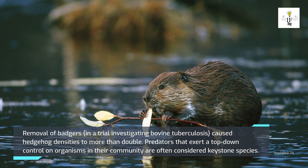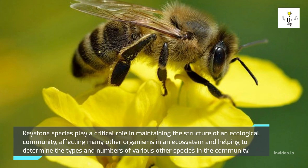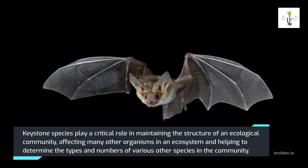A keystone species is a species which has a disproportionately large effect on its natural environment relative to its abundance — a concept introduced in 1969 by the zoologist Robert T. Payne. Keystone species play a critical role in maintaining the structure of an ecological community, affecting many other organisms in an ecosystem.